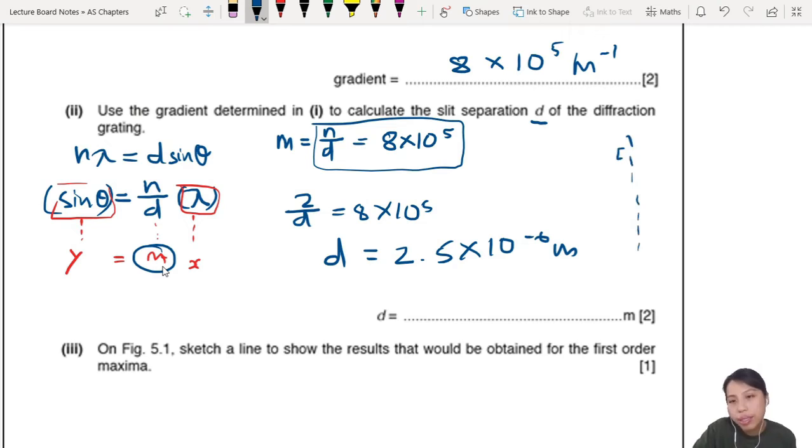So you write here 2.5 × 10^-6. Two marks - one is if you know how to find your equation, this one you rearrange. You know how to do this equal to gradient - that's a C1 mark and then an A1 mark. Very useful paper 3 skills they will ask you in paper 2.